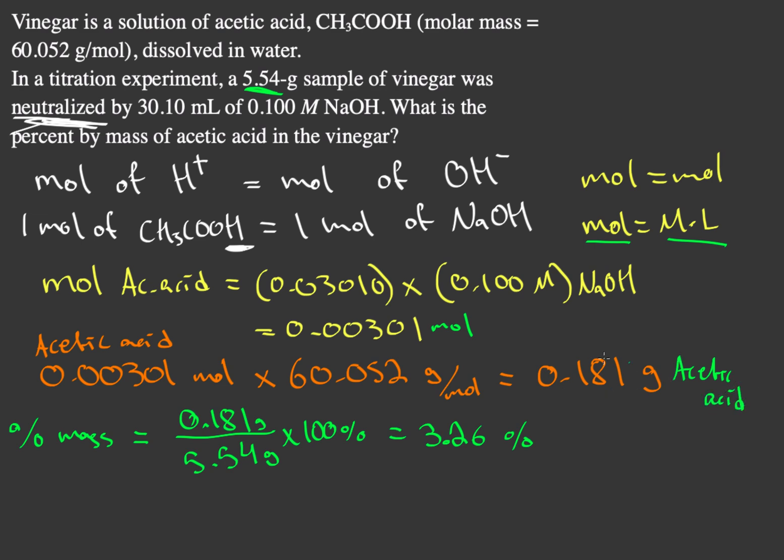From there, if we have our grams, we can do our part of grams divided by the whole sample of grams, and that whole sample is from vinegar. So this is our acetic acid, this is our vinegar. We multiply it by 100%, and that gives us our percent composition of acetic acid in the vinegar.